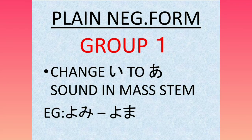So guys, if we look at the two rules — Group 1. Rule number 1 is to cancel the masu ending. Rule number 2 is to change the E sound into the R sound in the verb stem.